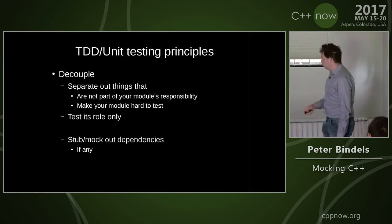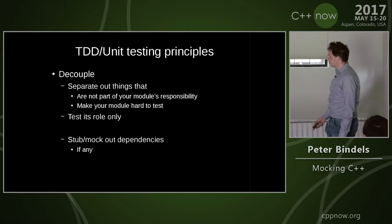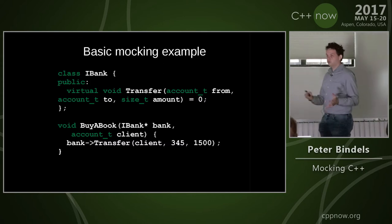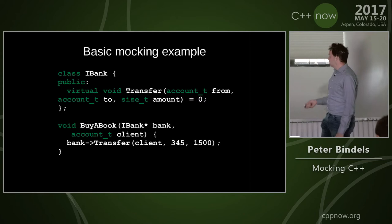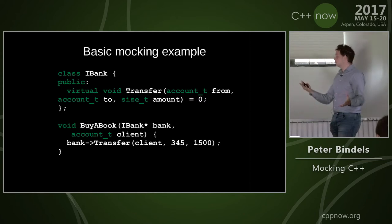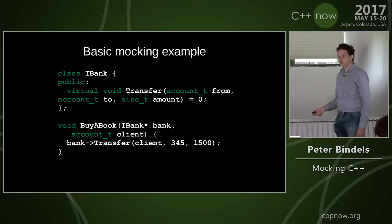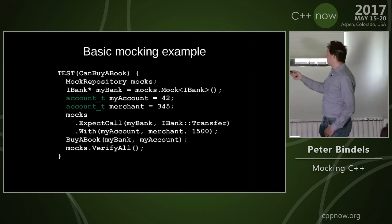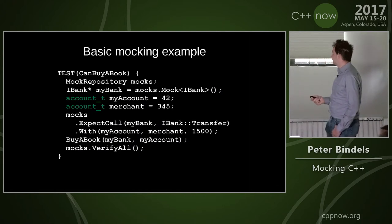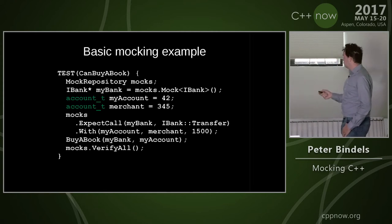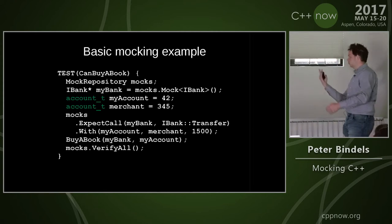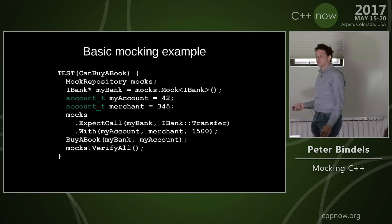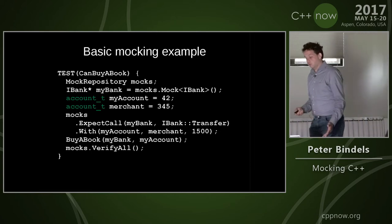The technique to do that is to mock out a dependency. For a basic example: we have a bank, and I can transfer money from an account to another with a certain amount. I can buy a book — given my bank and my account, I transfer money to a merchant's account. I have a mock bank, because I'm not spending money on my own account. I expect a call on the bank to transfer from my account to the merchant's account, call the function, and verify that it did that call. On a basic simple level, this is what mocking is.